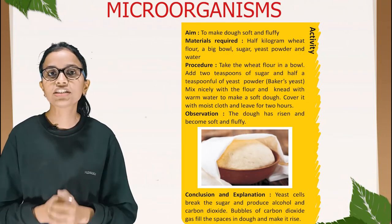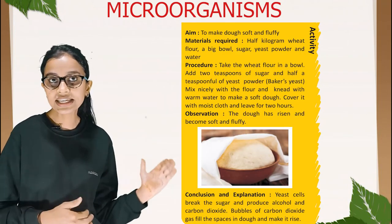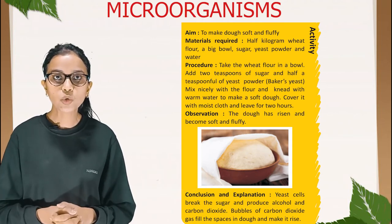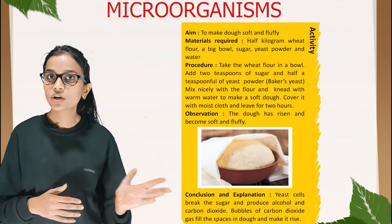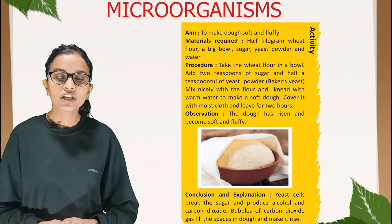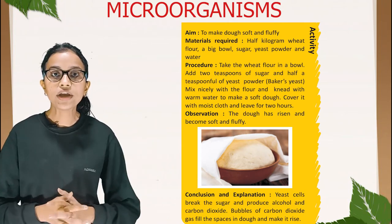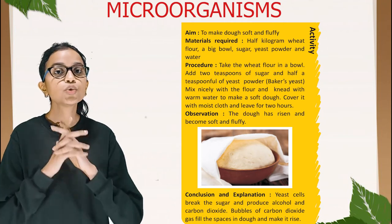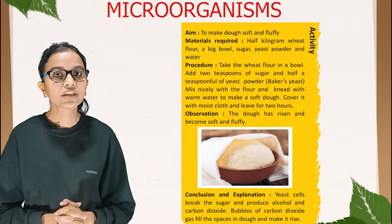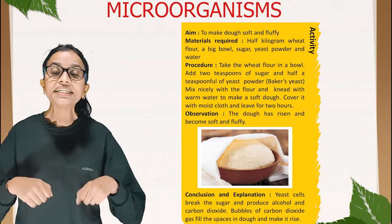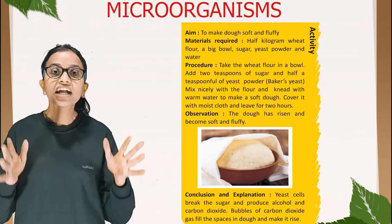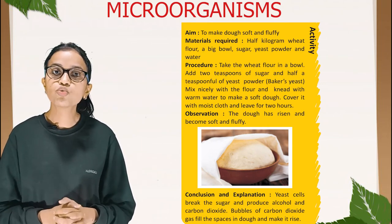Another activity: the aim is to make dough soft and fluffy. Materials required: half kilogram wheat flour, a big bowl, sugar, yeast powder, and water. Procedure: take wheat flour in a bowl, add two teaspoons of sugar and half a teaspoon of baker's yeast powder. Mix nicely with the flour and knead with warm water to make a soft dough. Cover it with a moist cloth and leave for two hours. Observation: the dough has risen and become soft and fluffy.